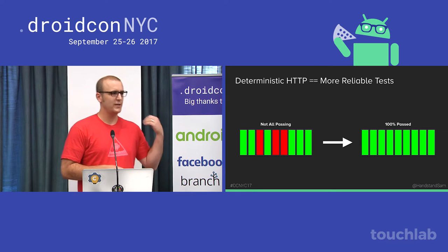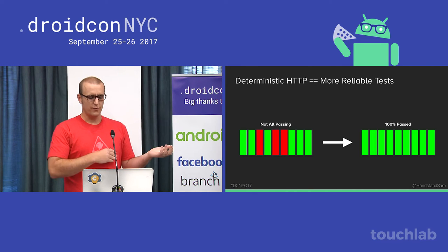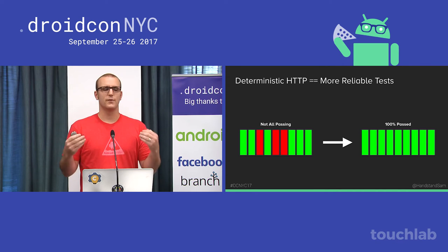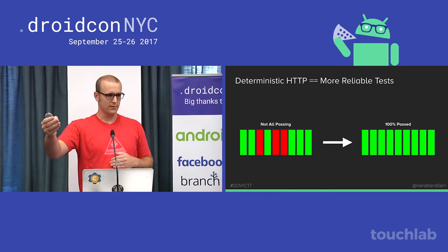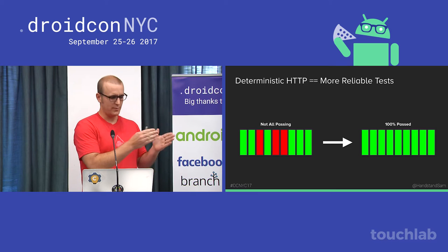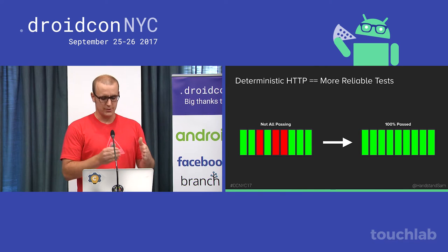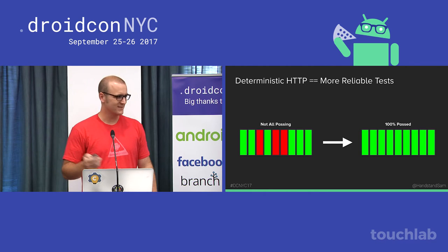If you're hitting your real server and it goes down or somebody's deploying a new version, you're going to get failed tests. But you're writing these tests to see if your Android app is functioning the way it should. Because your app is just talking over HTTP, you don't need to hit the real server — you can hit a WireMock server. That way you know it's going to be the same HTTP response every single time, and your tests should pass.